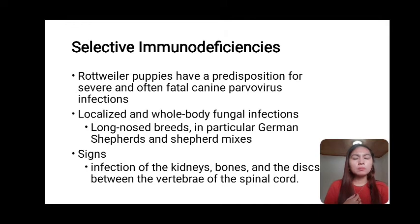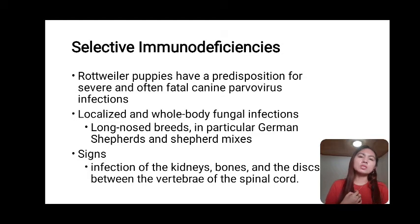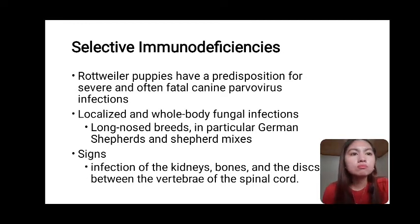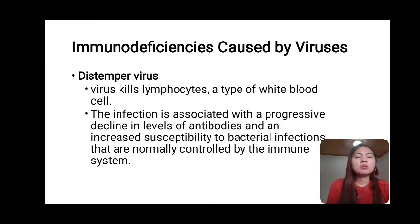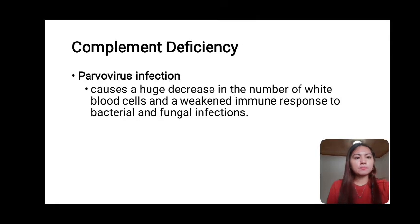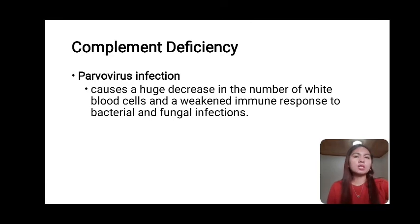Selective immunodeficiencies include, for example, red-nosed puppies with a predisposition for severe and often fatal canine parvovirus infections. Localized and whole-body fungal infections occur in long-nosed breeds, particularly German Shepherds and shepherd mixes, with signs including infections of kidneys, bones, and tissue between the vertebrae of the spinal cord. Regarding immunodeficiencies caused by viruses, distemper virus kills lymphocytes and is associated with a progressive decline in antibody levels and increased susceptibility to bacterial infections. Parvovirus infections cause a huge decrease in the number of white blood cells and weaken the immune response to bacterial and fungal infections.